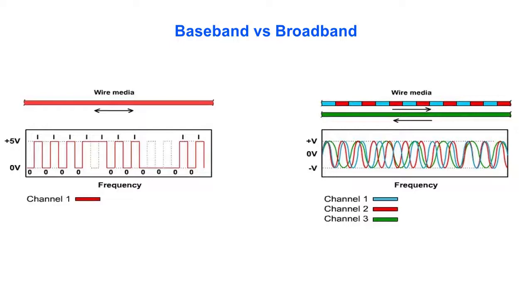On the other hand, broadband is a transmission form in which signals are modulated as radiofrequency analog pulses that use different frequency ranges. The use of multiple frequencies enables a broadband system to utilize multiple channels and enables the medium to carry more data than a baseband system.